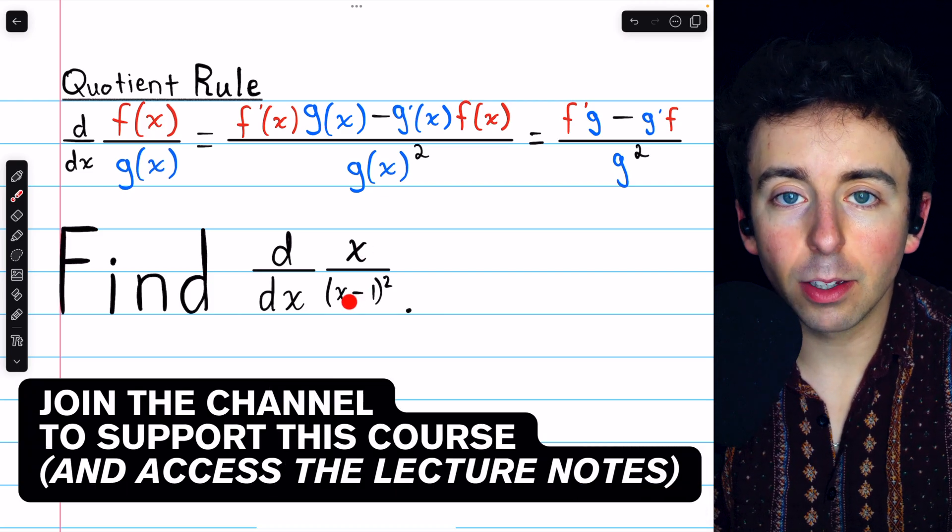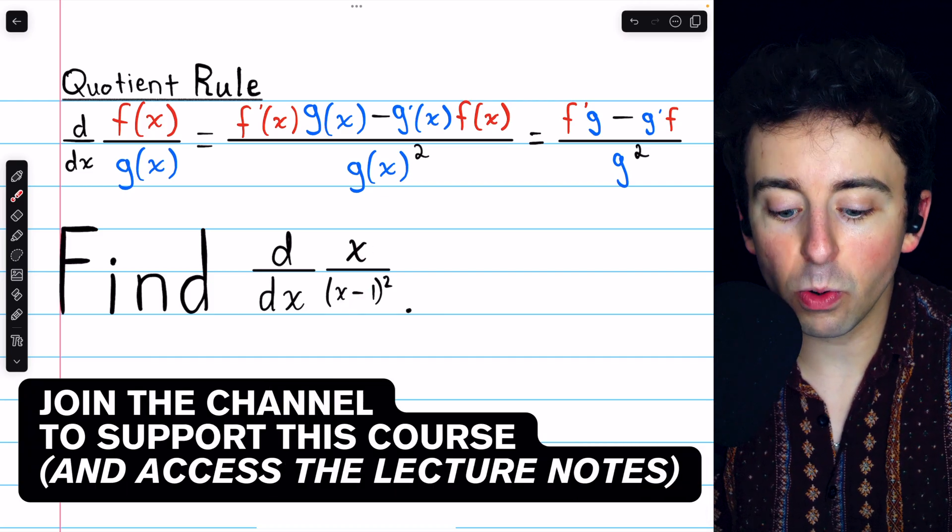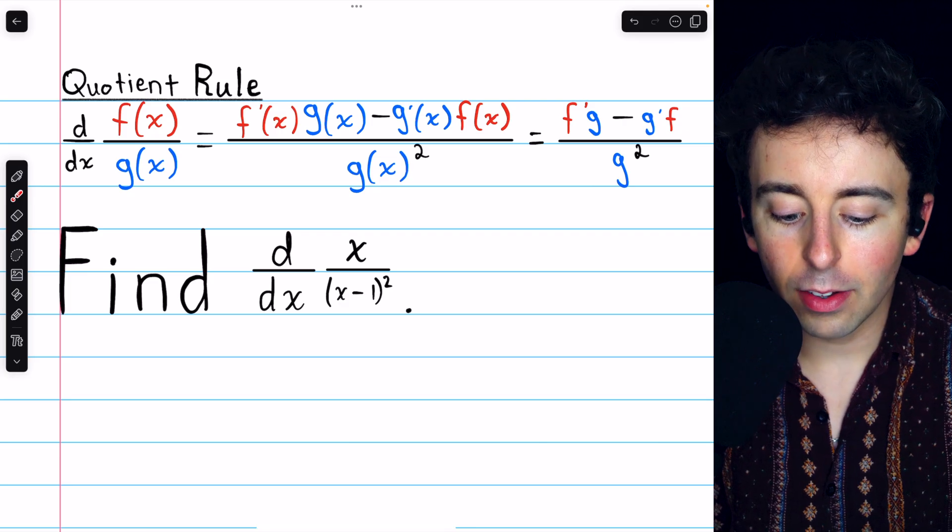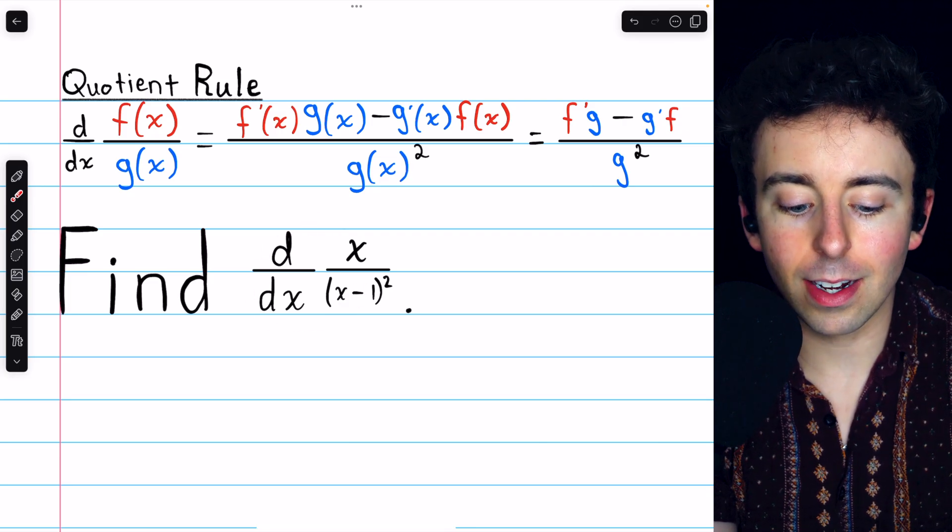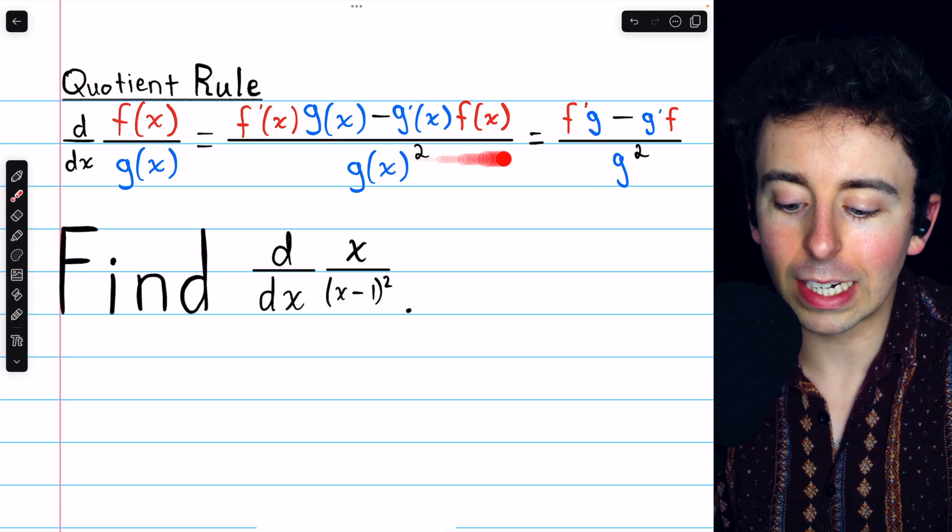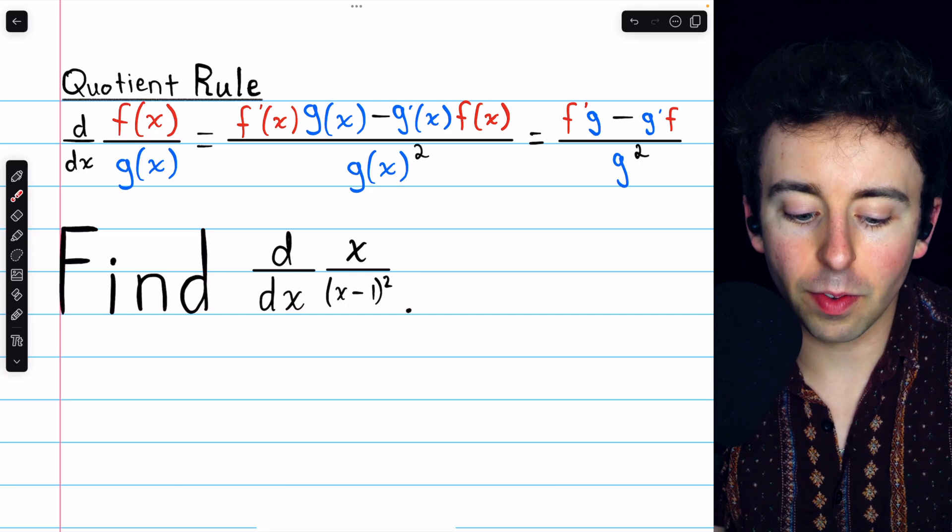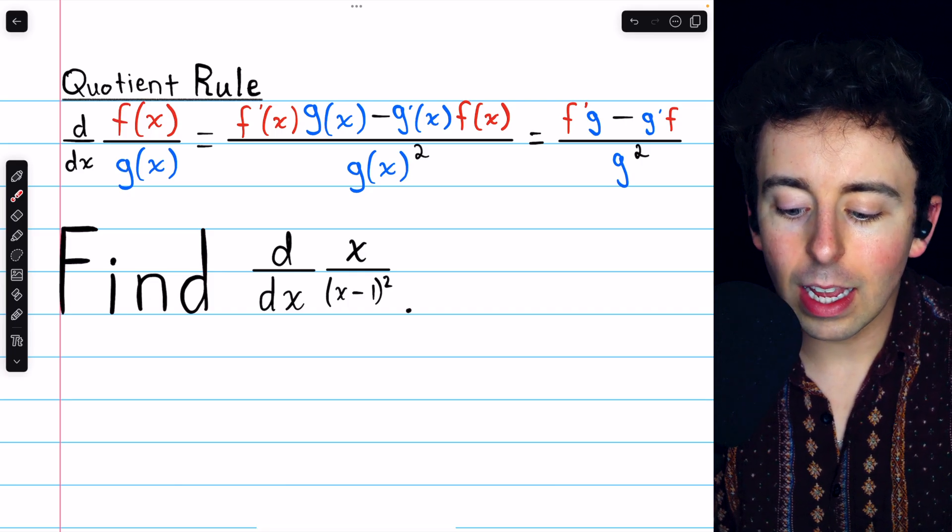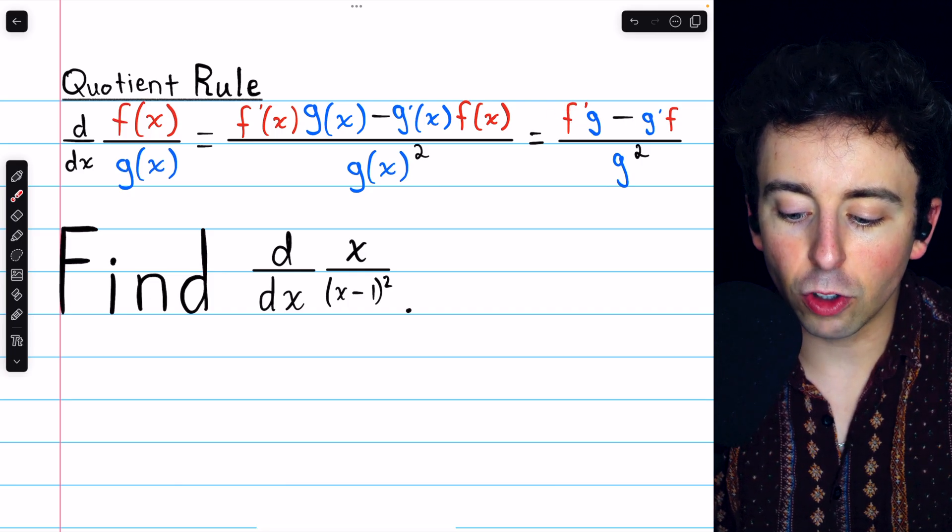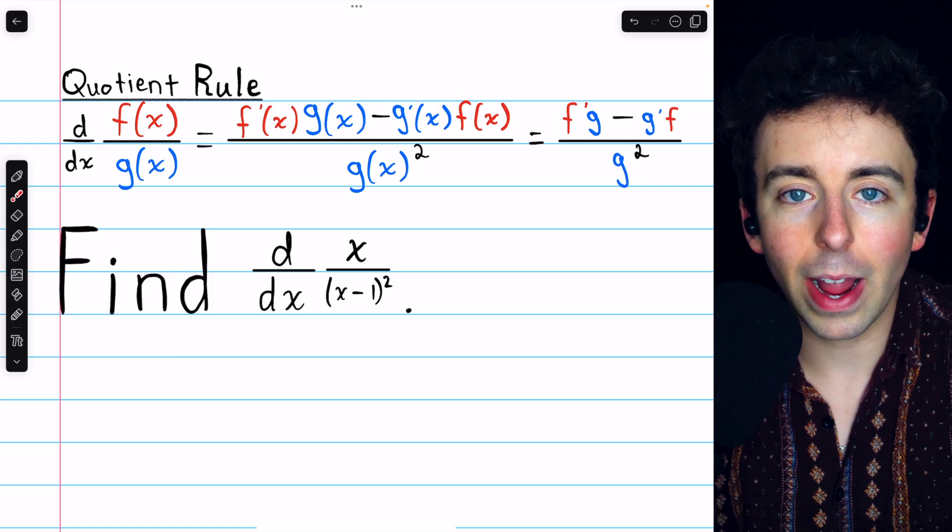x divided by x minus 1 squared is a quotient of two functions. So to find its derivative, we need the quotient rule, which I've written here. The derivative of f divided by g is f prime g minus g prime f all divided by g squared.